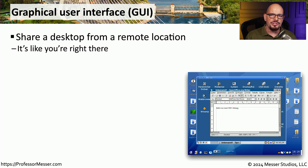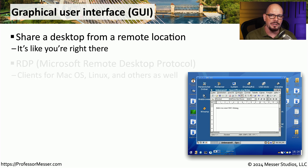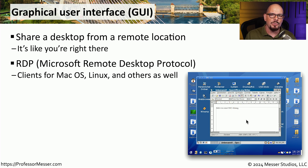Working at a command line is useful, especially on devices that support it, but occasionally you need to provide remote access to a graphical front end. You can do that using some type of remote sharing software so that you can be at a remote location, yet still see and operate the same desktop as someone sitting directly in front of that computer. If this is a Windows computer, you're using RDP, the Microsoft Remote Desktop Protocol.